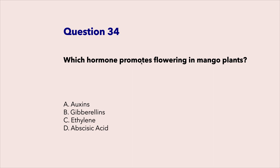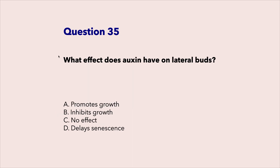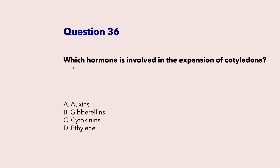Which hormone promotes flowering in mango plants? Gibberellins. What effect does auxin have on lateral buds? Inhibits growth. Which hormone is involved in the expansion of cotyledons? Cytokinins.